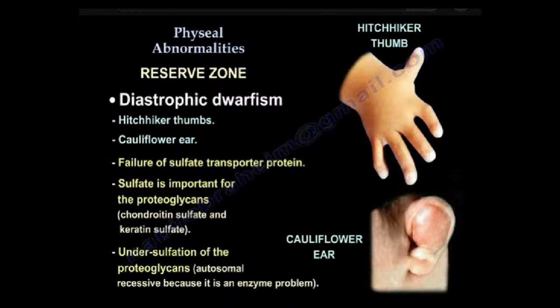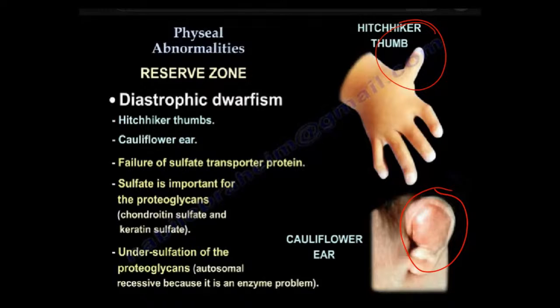How about diastrophic dwarfism? With diastrophic dwarfism, you find a cauliflower ear and hitchhiker thumb. It is a failure of sulfate transport — you need the sulfate for the proteoglycan, specifically chondroitin sulfate and keratan sulfate. It is an autosomal recessive problem.